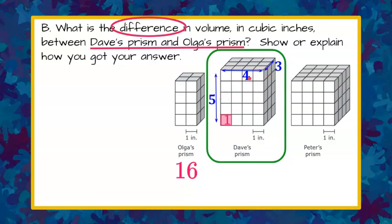So length times width times height - those measurements are interchangeable. I could say that on this front layer, five by four gives me 20 one-inch cubes, and I have three layers going back. So 20 plus 20 plus 20 is 60. Or I could do five times four is 20, times three is 60. So however you look at it, Dave's prism is 60 cubic inches.